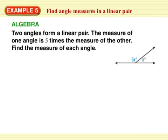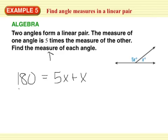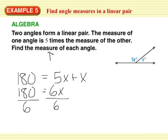Example 5: find angle measures in a linear pair. Two angles form a linear pair. The measure of one angle is 5 times the measure of the other. Find the measure of each angle. Let's look at our drawing. I have a line, this angle, and this angle. You know that a line is 180 degrees, and I get 5x plus x. Collect like terms — you have x equals 30.